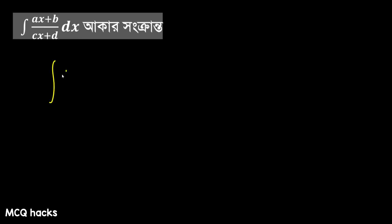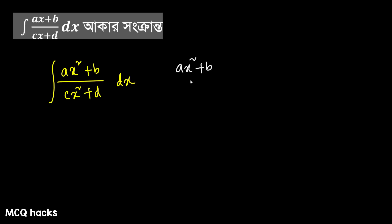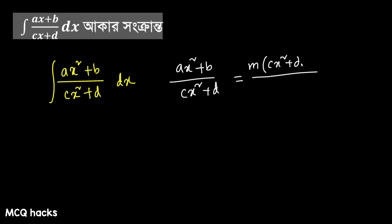Integration of ax squared — I will give ax squared plus b, so b, cx squared, d, dx. Almost above the answer. The formula is correct. This fraction is ax² plus b divided by cx² plus d. If you are doing this, you are doing constant into cx² plus d plus r constant, and you are doing cx² plus d. This is the format.